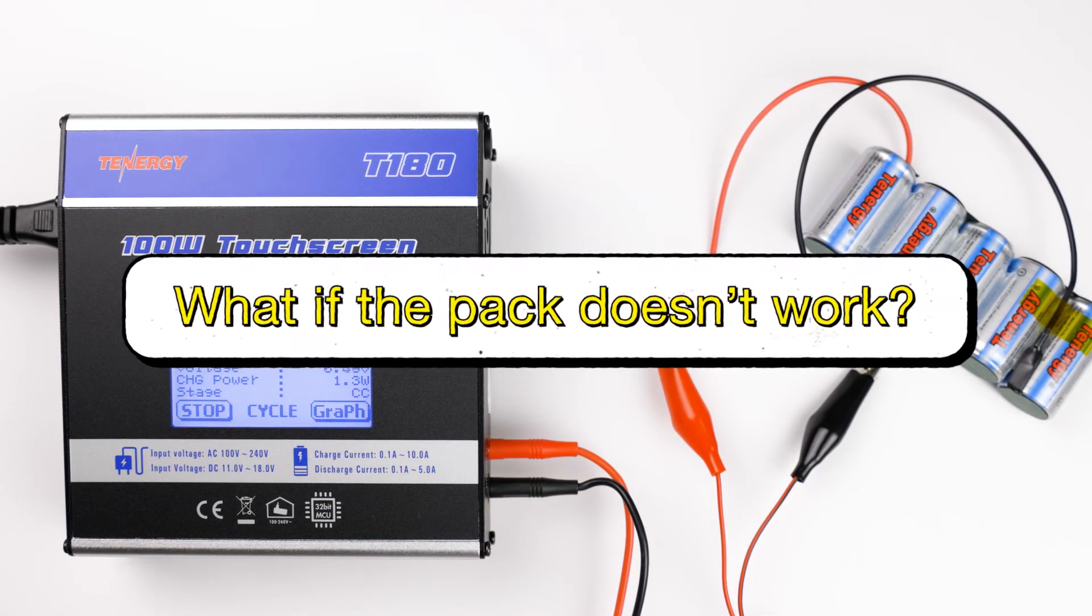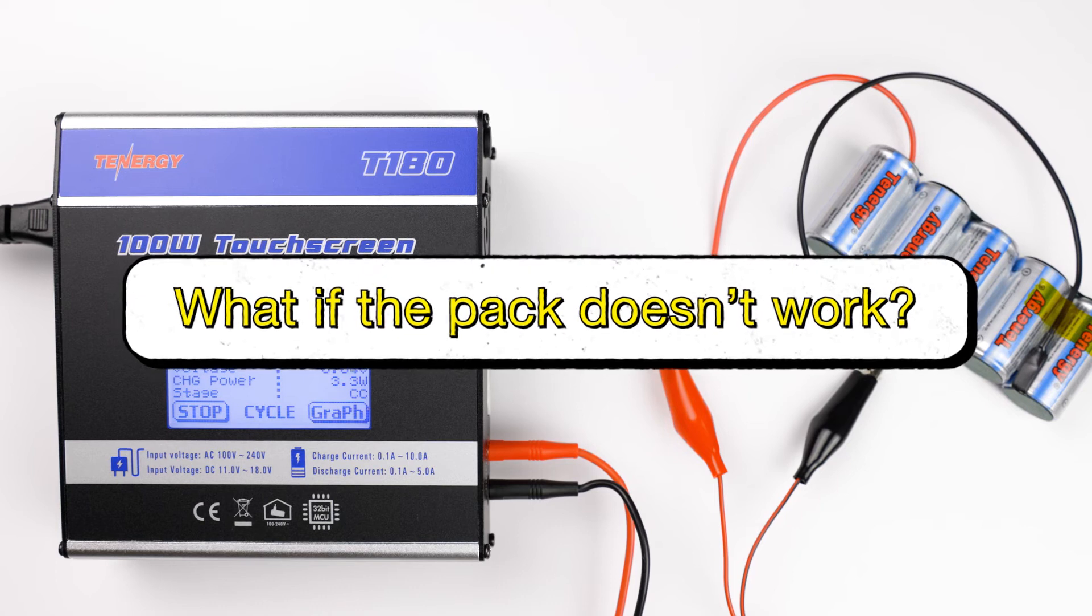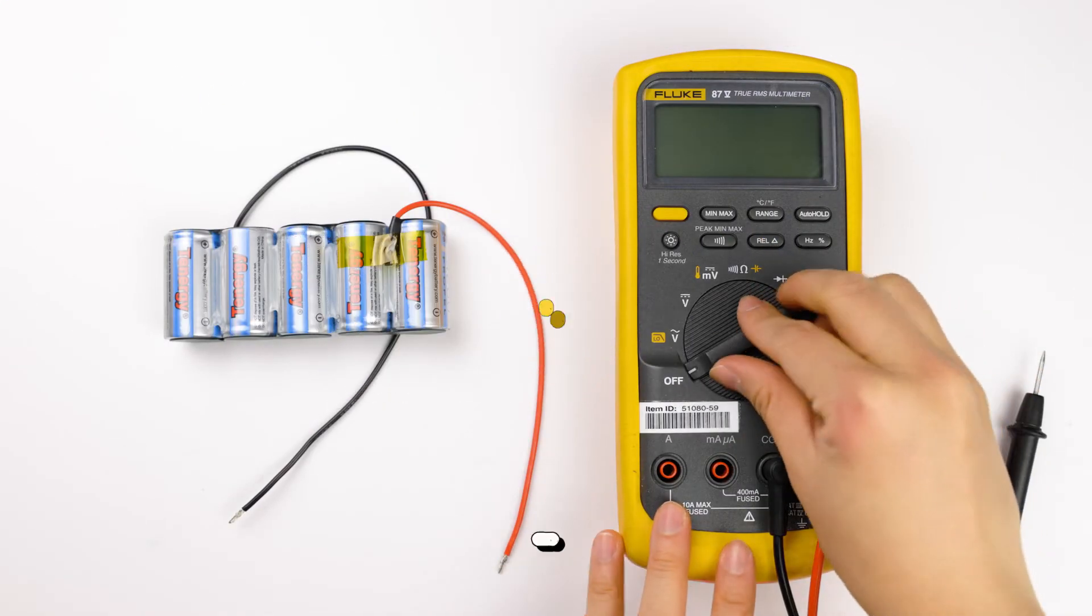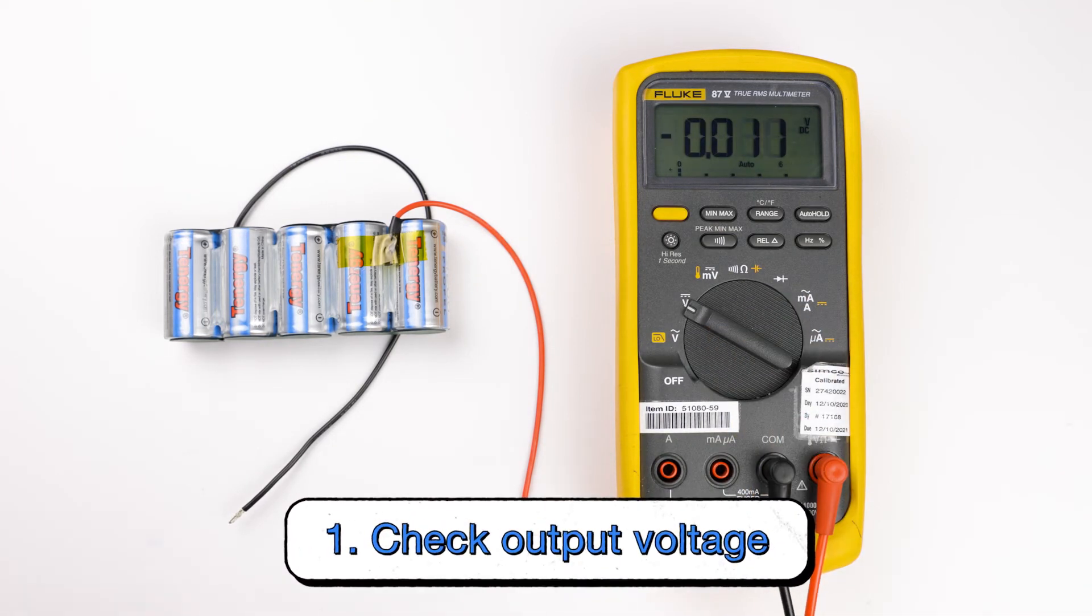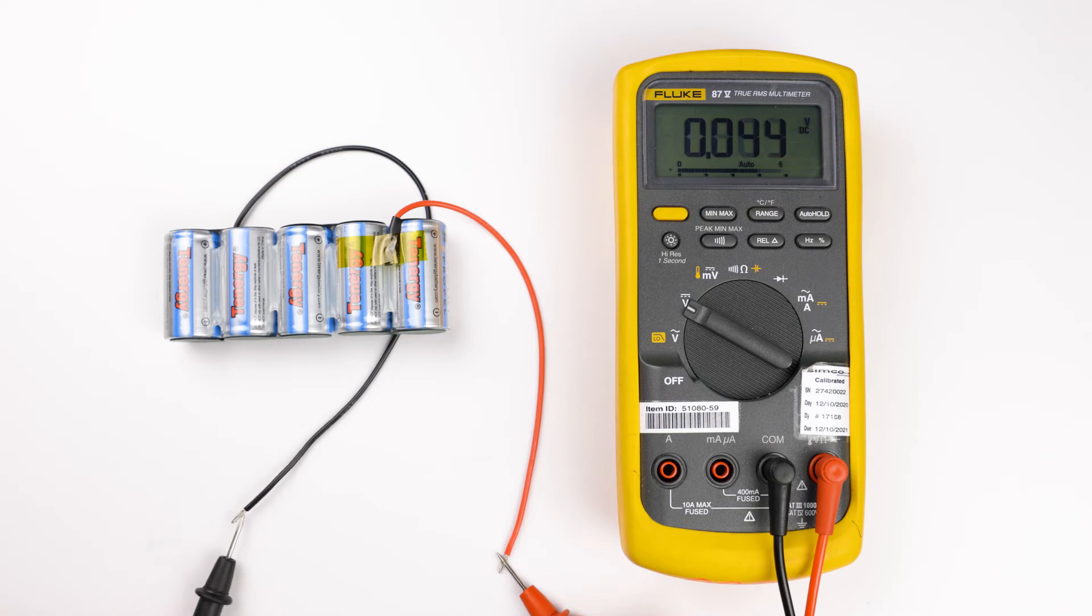However, in case a battery pack doesn't work and you don't know what went wrong, here are a few extra steps you can follow to troubleshoot it. First, check its output voltage to make sure all the connections are done properly. If it includes a PCB, you may need to charge it for a few seconds.